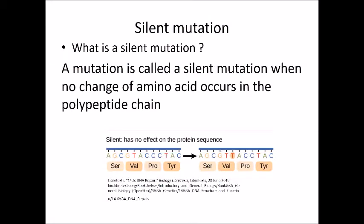What is a silent mutation? A mutation is called a silent mutation when no change of amino acid occurs in the polypeptide chain.